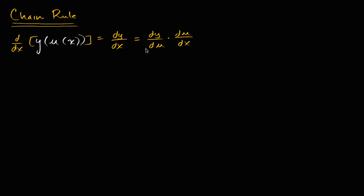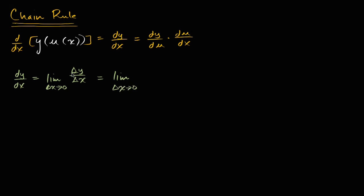But how do we actually go about proving it? Well, we just have to remind ourselves that the derivative of y with respect to x is equal to the limit as delta x approaches zero of change in y over change in x. Now we can do a little bit of algebraic manipulation here to introduce a change in u. So this is going to be the same thing as the limit as delta x approaches zero, and I'm going to essentially divide and multiply by a change in u. So I can rewrite this as delta y over delta u times delta u over delta x.